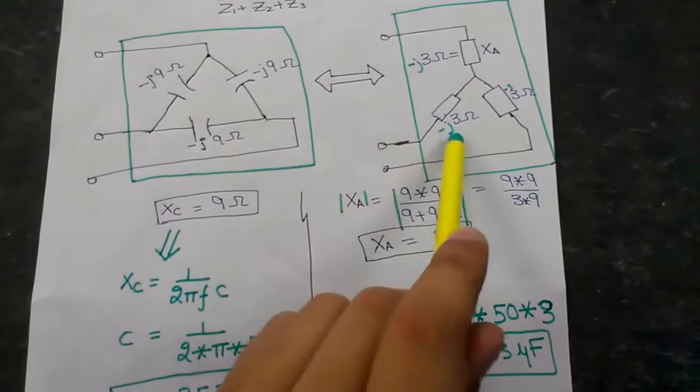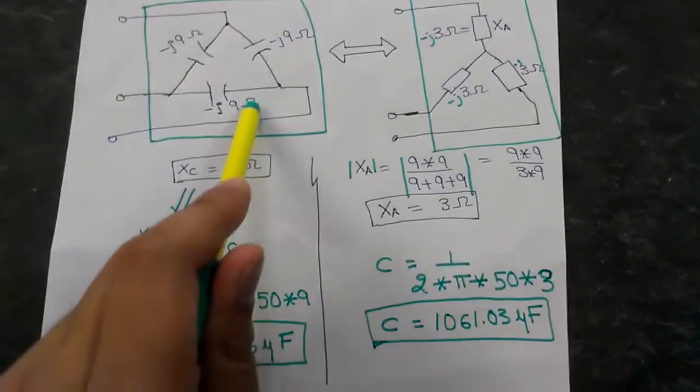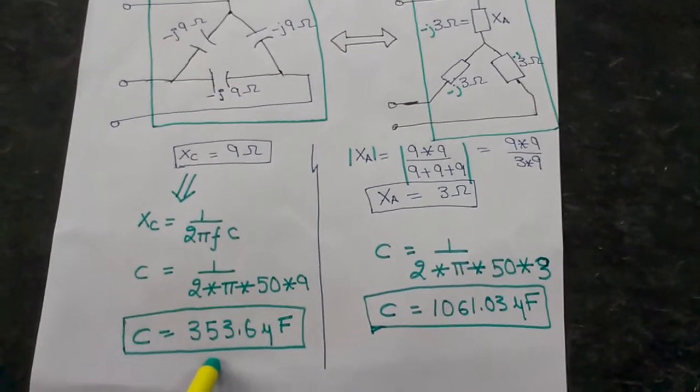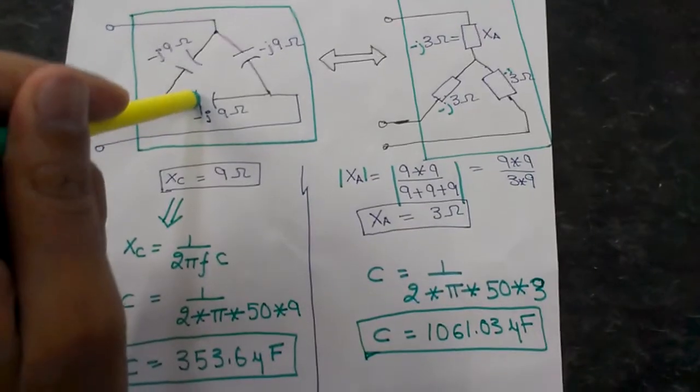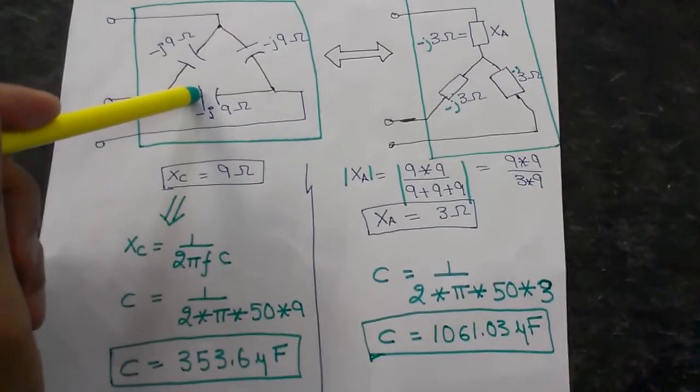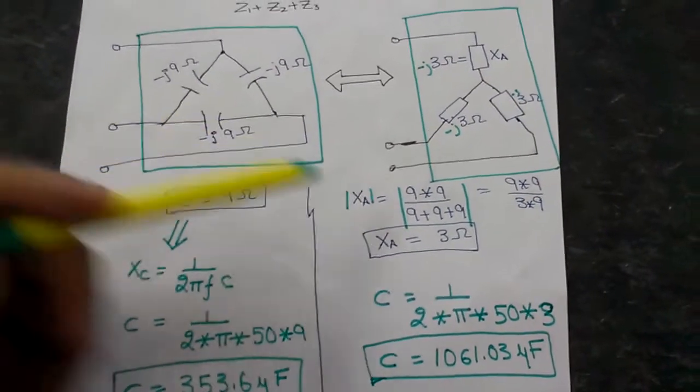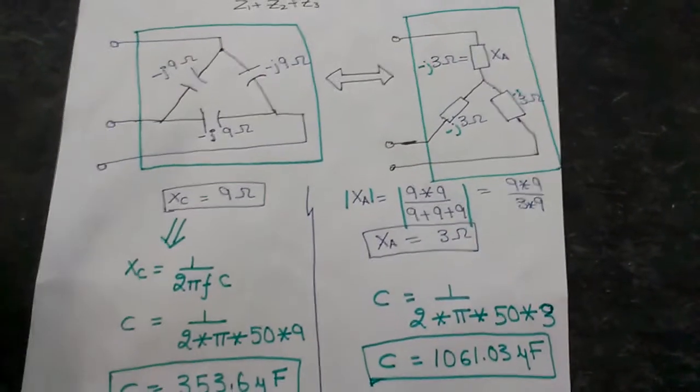So if the reactive power they are going to provide is equal, but here you see the capacitance value that you need is less for the Delta configuration, so that means this configuration will be cheaper as compared to this configuration, and that is the reason.